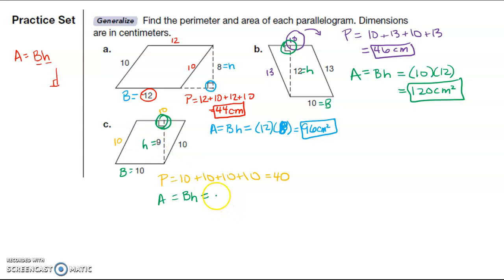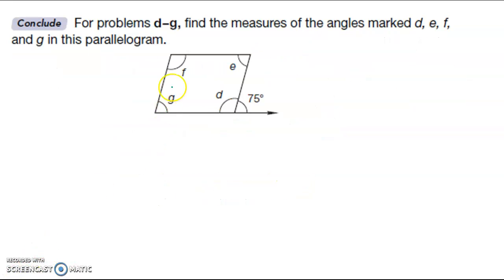Okay, for problems D through G, find the measures of the angles. So this is kind of like a puzzle piece—we're going to find one and then we're gonna find the rest of them from that. Okay, so what I know about this angle here is that it is what we call a straight angle, so it adds up to 180 degrees. So if I subtract this out, I should be able to get D. So if I subtract here, I'm gonna get 105 degrees. So D is 105 degrees.